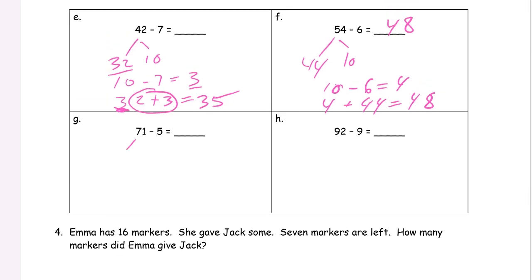71 minus 5. Take out 10. You have 61 and 10. 10 minus 5 equals 5, and 61, don't forget them, 61 plus the 5, 66.